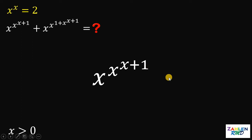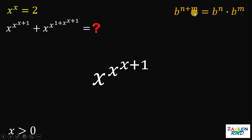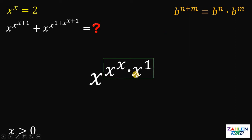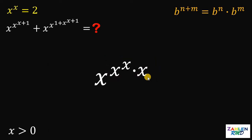To answer this question, we only need 2 laws of exponents. Here's the first one: if we have b raised to n plus m, this is equivalent to b raised to n times b raised to the power of m. Now let's focus on the expression x raised to x plus 1. We can use this identity — this is equivalent to x raised to x times x raised to 1. Take note that x raised to 1 is just x.